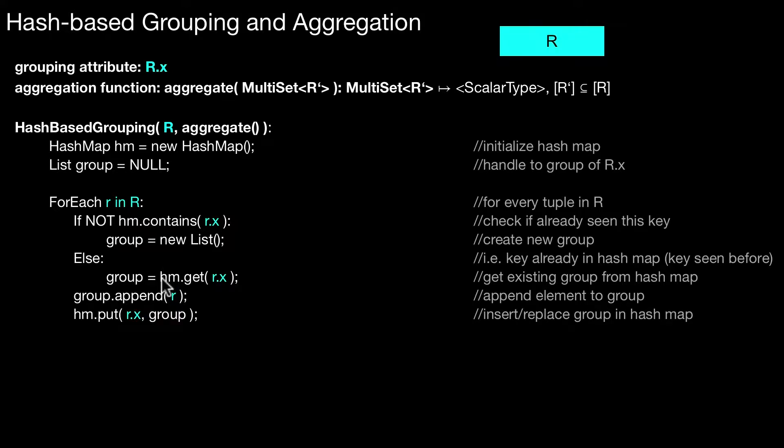And then, you actually don't require this code line in most programming languages - it's just for clarity and completeness. Here, we overwrite the old entry. This is not required if this group is just a reference, if it's just a shallow copy to the group. If it were a deep copy, you would have to put it here like this. So in most programming languages, you don't need that. But it just signals that after this code line in the hash-map, this mapping exists - the mapping from R.x to the extended group, which has now an additional entry.